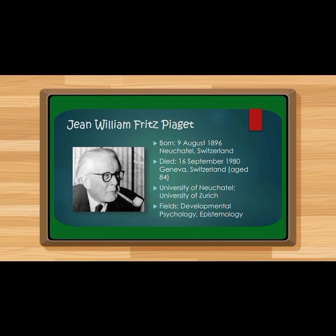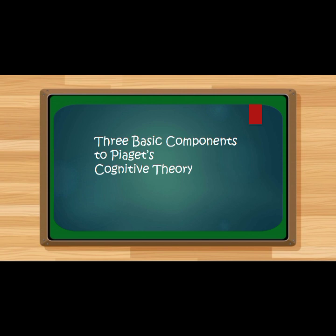Piaget was initially into biology and also had a background in philosophy. Knowledge from both these disciplines influenced his theories and research of child development. Out of his researches, Piaget came up with the stages of cognitive development. To better understand what happens during cognitive development, it is very important to first examine a few of the important ideas and basic cognitive concepts introduced by Piaget.